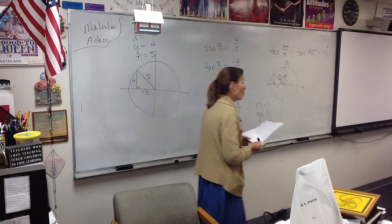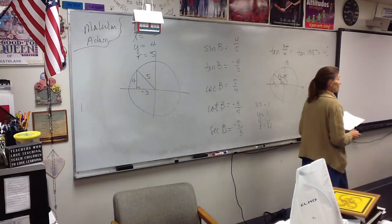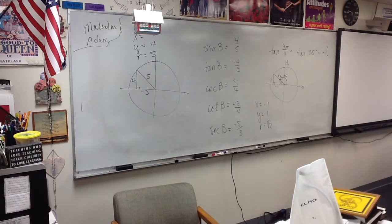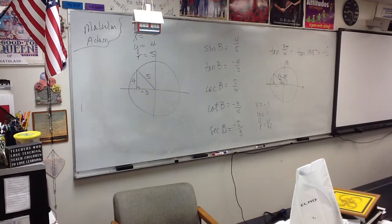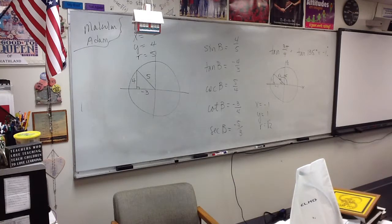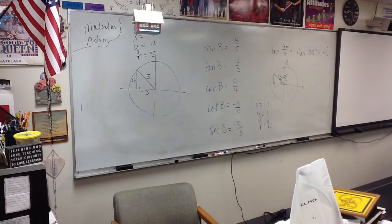Number 5 at the bottom says find one angle co-terminal. Let's find a few more than one for extra practice. How do we find co-terminal angles? Add or subtract a revolution. Since this problem is given in degrees, we'll add or subtract 360. So one positive co-terminal angle would be 420. A negative co-terminal angle would be negative 300. If you wanted more, you would just keep adding or subtracting 360s, and you can come up with as many as you want.